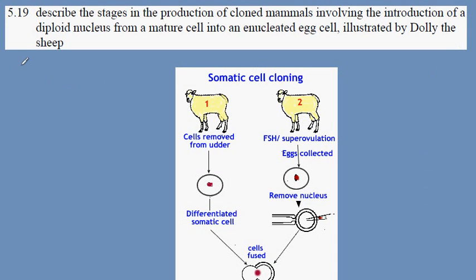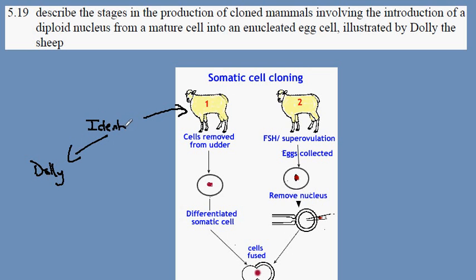IGCSE Biology syllabus statement 5.19. Here we're looking at cloning of mammals and illustrating this with reference to Dolly the sheep. The original animal is the one which is going to be cloned, and the clone is called Dolly. This animal and the clone will be genetically identical, hence the term clone.